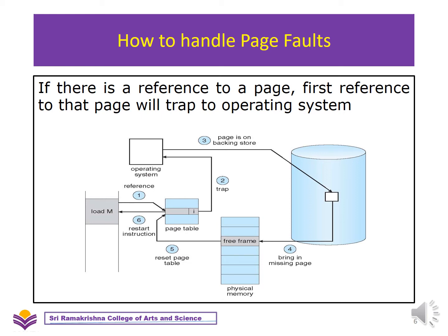We search for that page in the page table. If the page has been set as I — meaning the page is not available in memory — we immediately give a trap to the operating system. The operating system searches for that particular page in the backing store. If it finds the page in the backing store, it searches for a free frame in the physical memory and loads that page onto the free frame. Then it resets the page table: the I will be changed to V, the instruction will be restarted, and the process will continue. This is how page faults are handled.